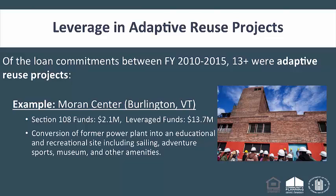Let's look at noteworthy examples to emphasize leverage. Adaptive reuse is the process of reusing an old site or building for a purpose other than which it was built or designed for. Here in Burlington, Vermont, the Moran Center used $2.1 million in Section 108 funds and leveraged $13.7 million for a leverage ratio of 1 to 6.5. The project is a conversion of a former manufacturing plant into an educational and recreational site including sailing, adventure sports, a museum, and other amenities.